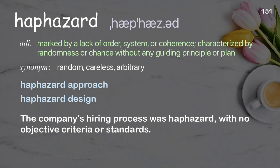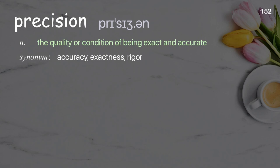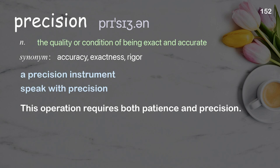Precision: the quality or condition of being exact and accurate. Examples: a precision instrument, speak with precision. This operation requires both patience and precision.